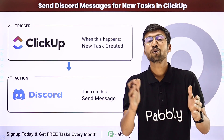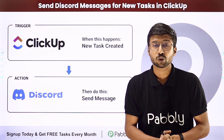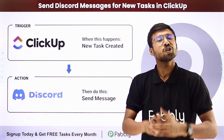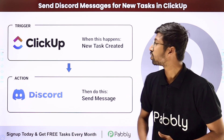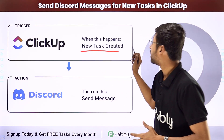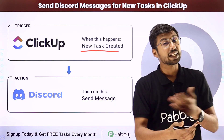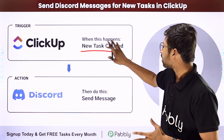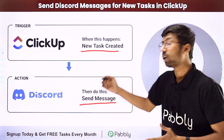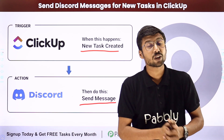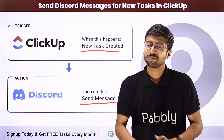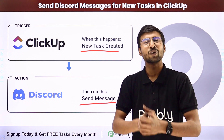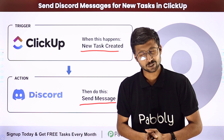So let me tell you how, using Pabbly Connect Automation, you can actually automate this process. The trigger of this automation will be creating a new task in ClickUp, and the action will be sharing the same task details as a channel message on our Discord channel automatically. Now how can you set up this automation? To know this, you have to come with me to my screen.